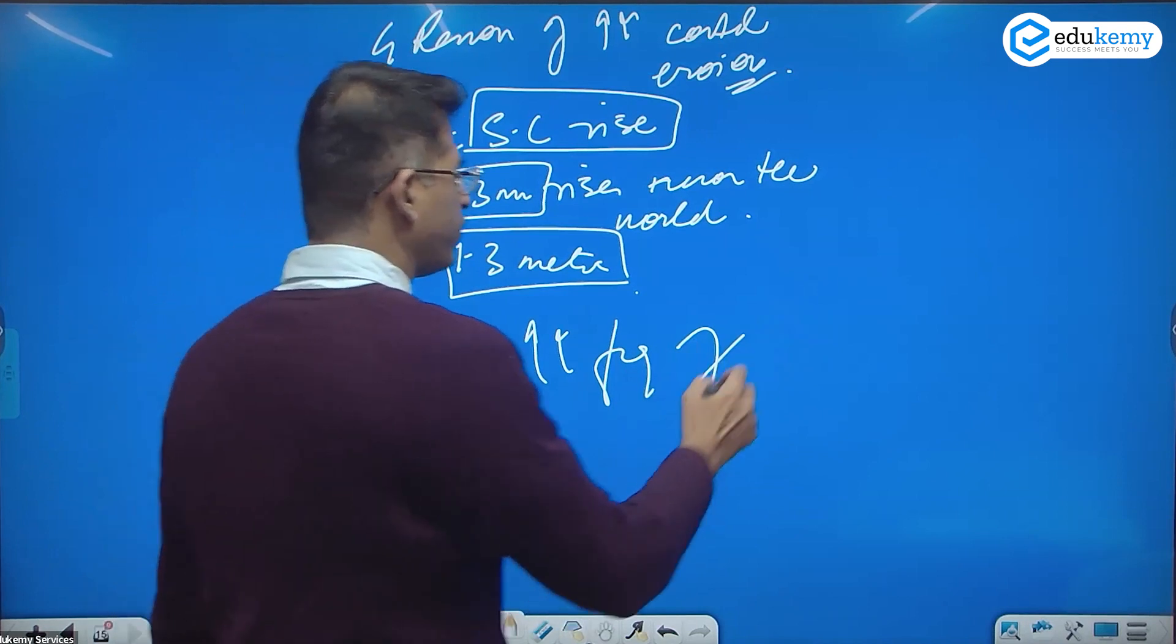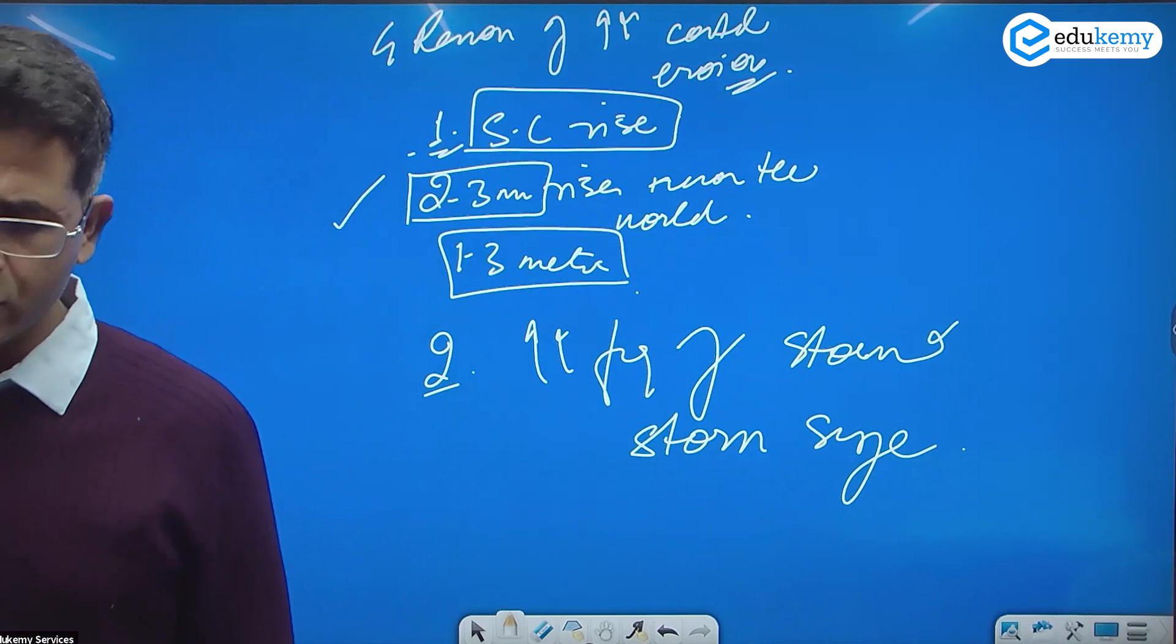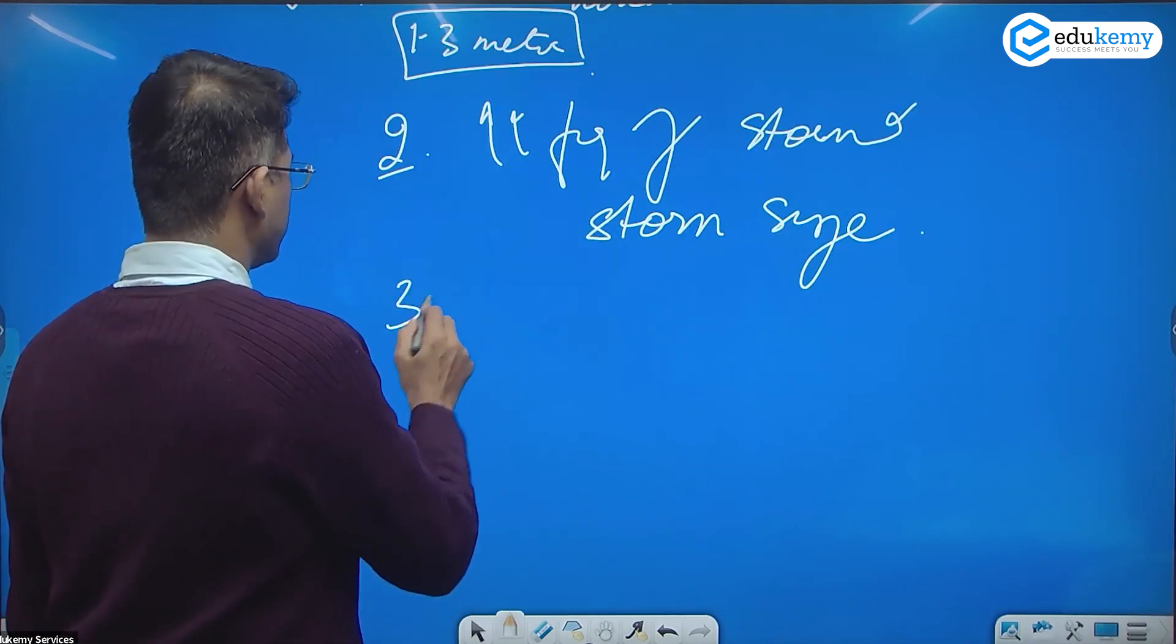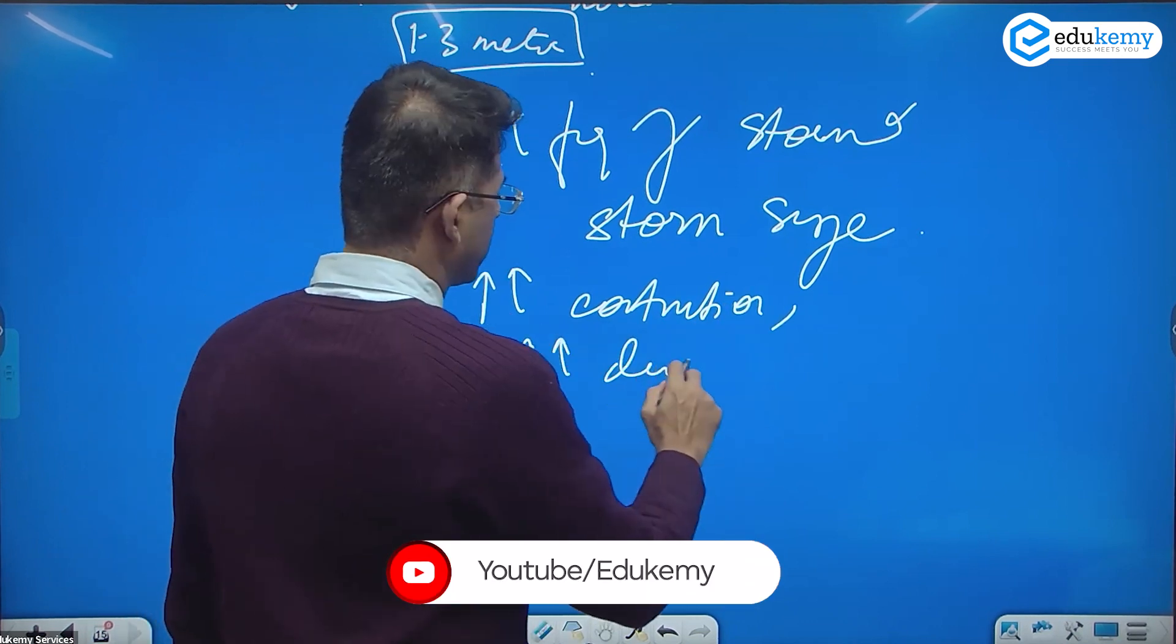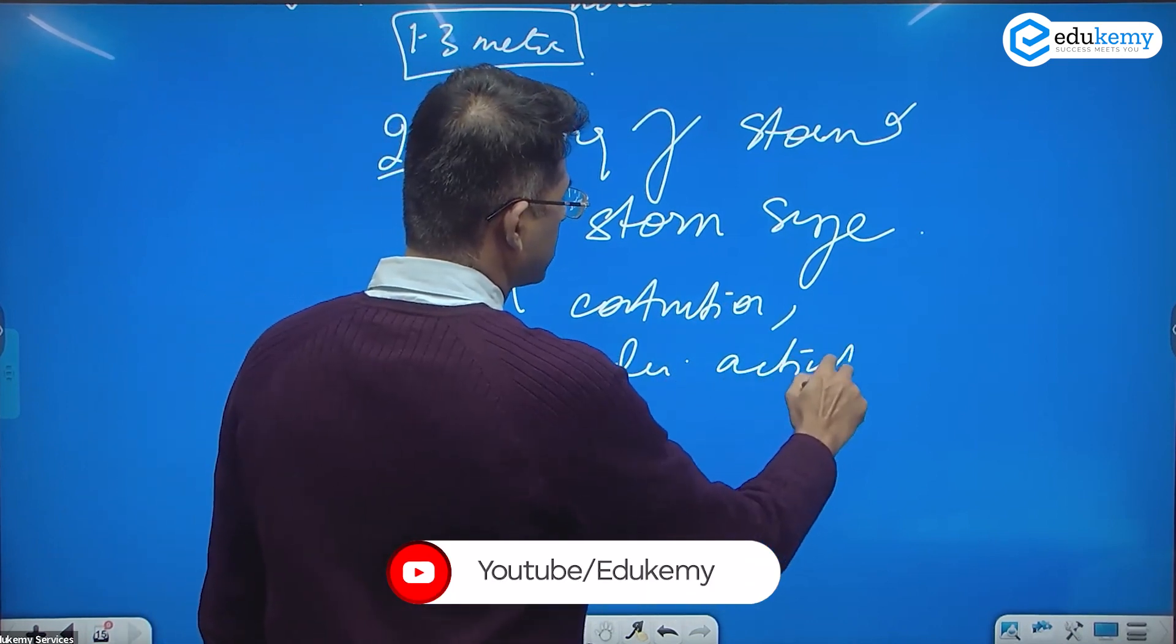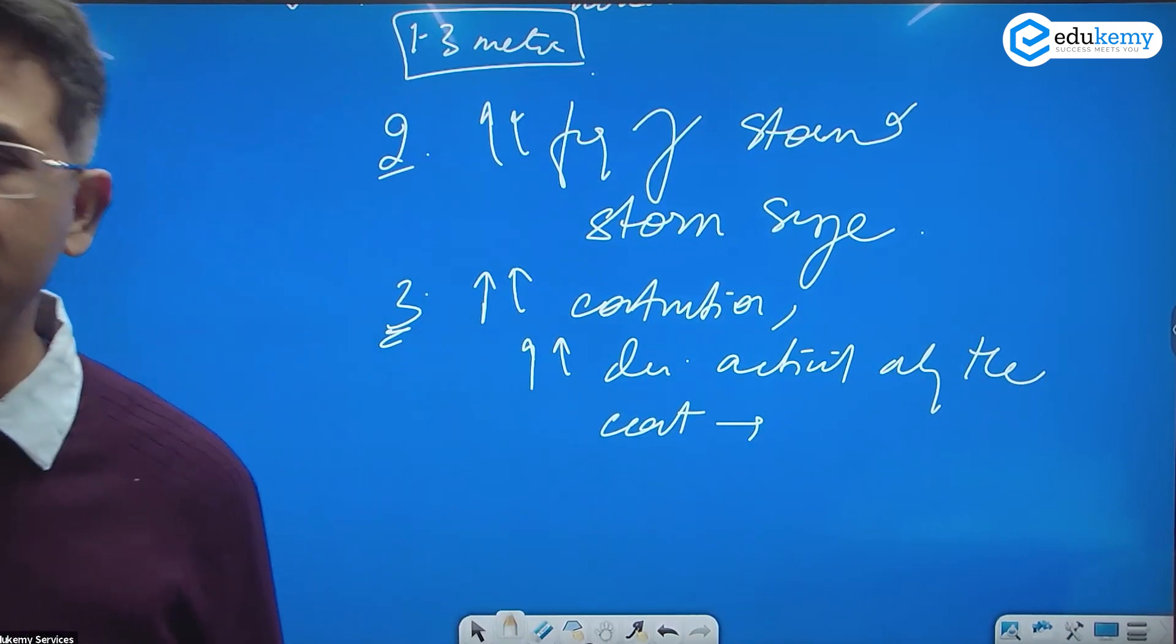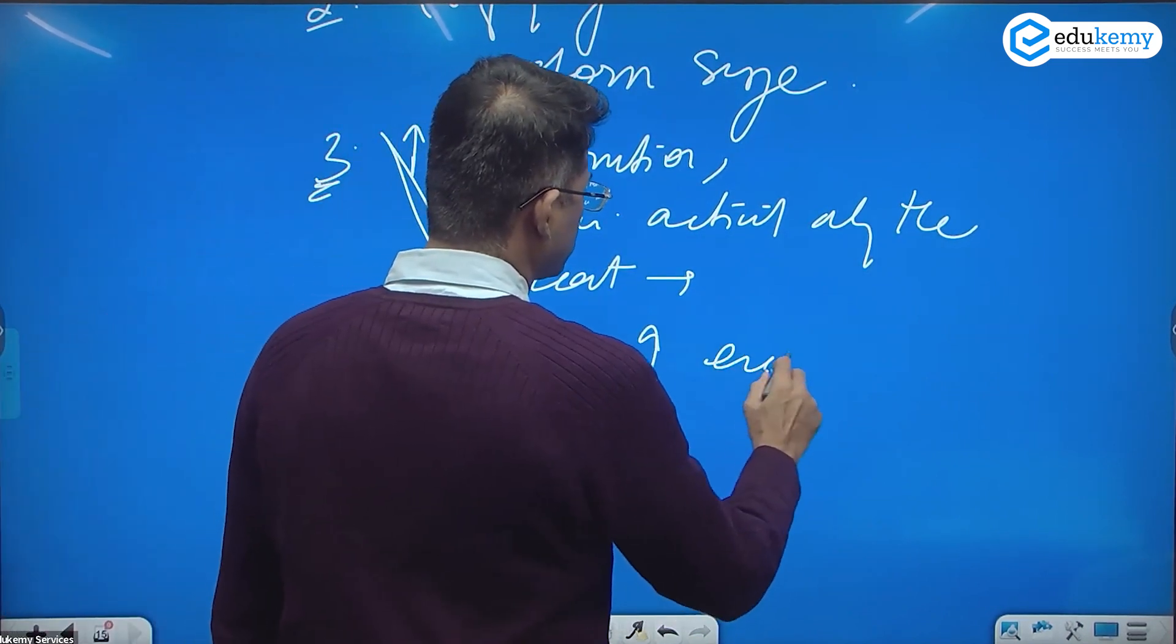The third is increased construction, increased development activities along the coast. That makes the coastlines unstable. Because of this, there is increased erosions along the urban areas, the construction of urban resorts, urban areas.